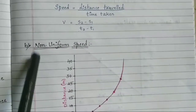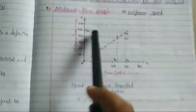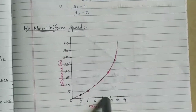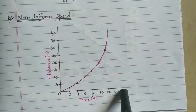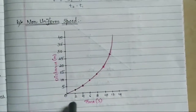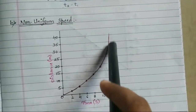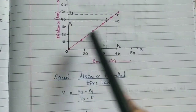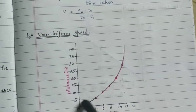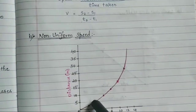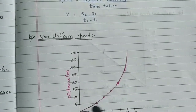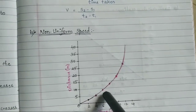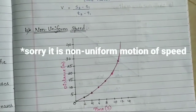Next, for the distance-time graph, there is one more graph for non-uniform speed. Everything is the same — time is on the x-axis and distance is on the y-axis — but the nature of the graph changes. Instead of a straight line (linear motion), here you can see a curve; this is non-linear motion. This graph denotes non-uniform speed.